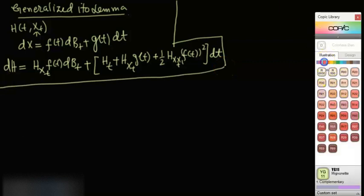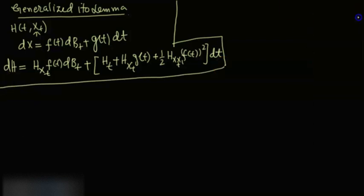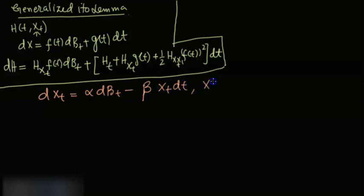Now I am given the Langevin stochastic differential equation, which is: dX(t) = α·dB(t) − β·X(t)dt, with X(0) = X₀. You can also write it in integral form, but let's not go into that.